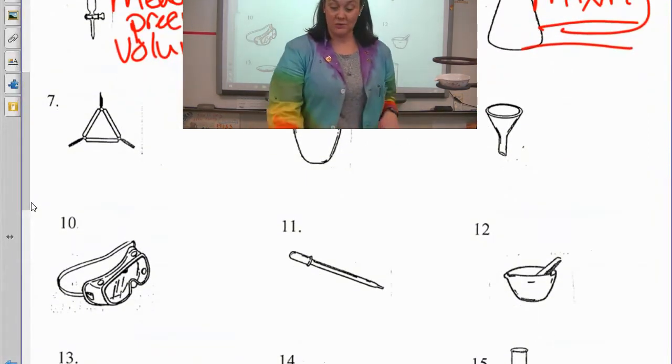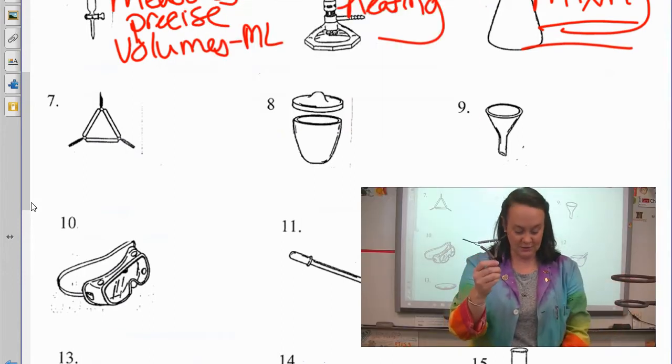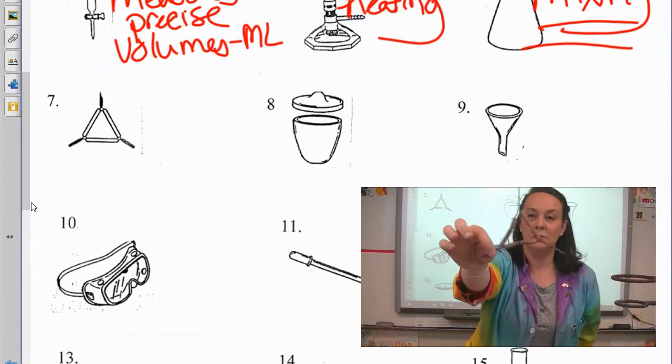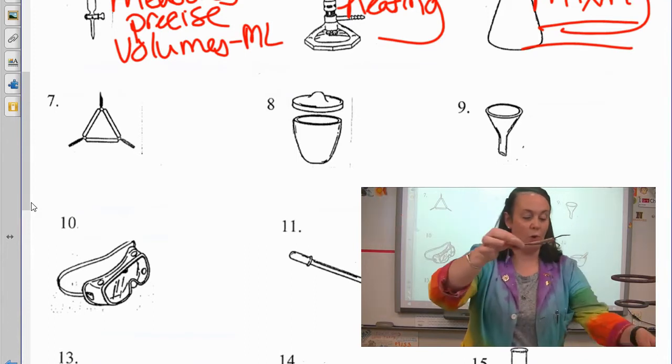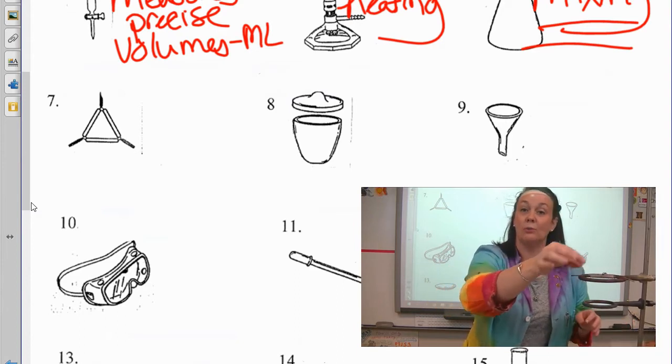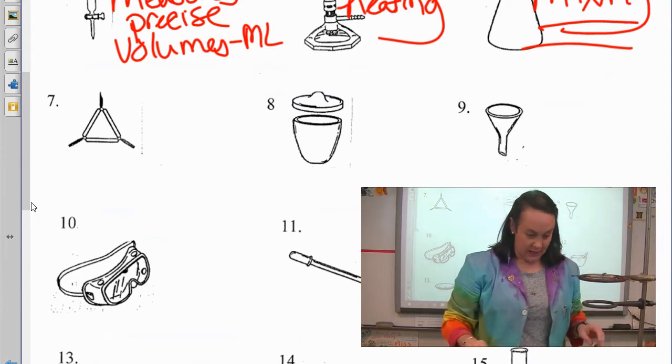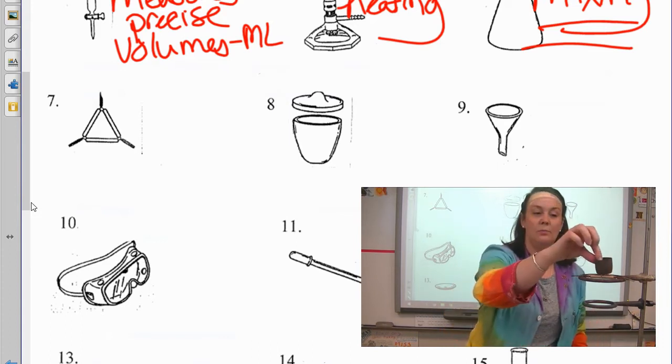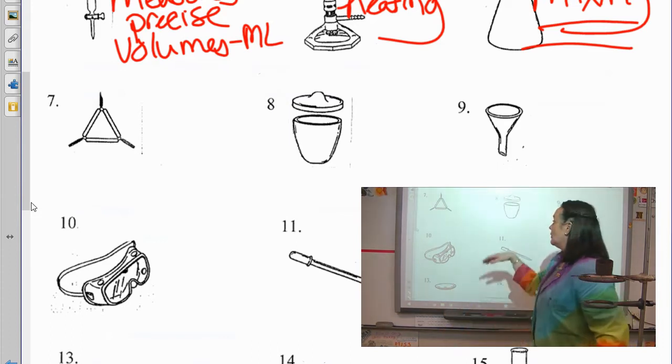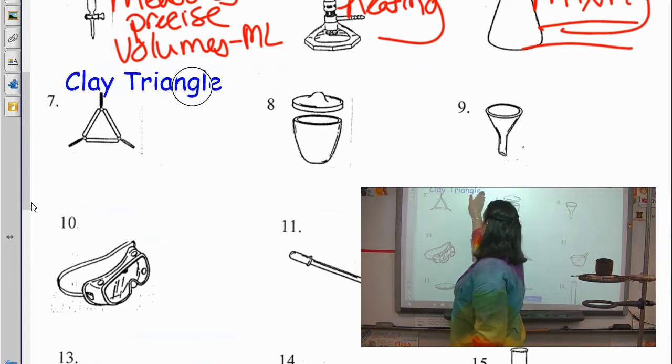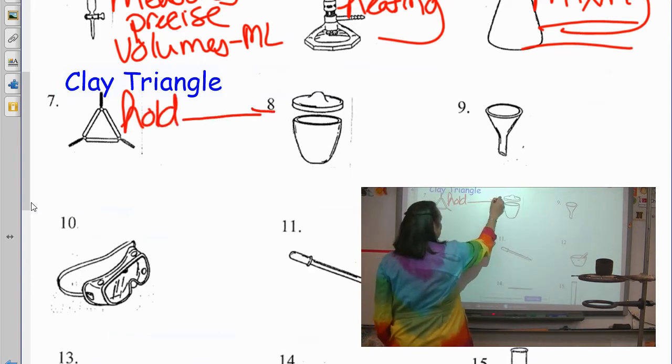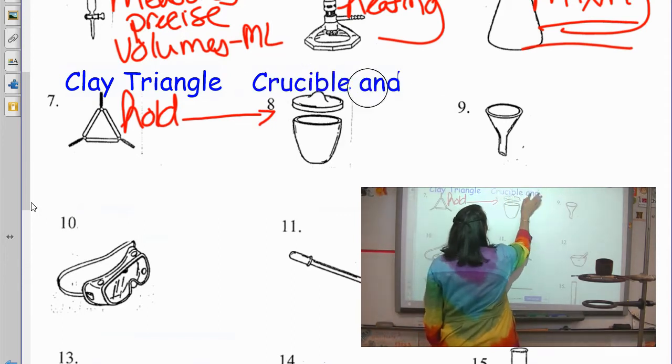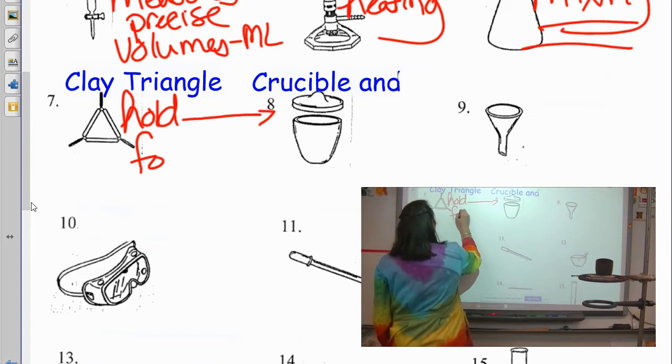The next one we have is called a clay triangle, and this is going to go along with something that we're going to have here very soon. The clay triangle looks like a triangle. It has little clay parts that are broken on purpose. And what we can do with these is that they sit nicely on what's called a ring stand. And then we can take a crucible, and we can put it on there, and then now it can be heated. So the clay triangle is used to hold this guy, who's called a crucible, and it's a crucible for heating.